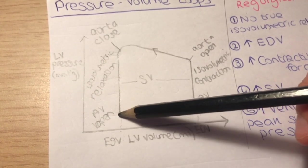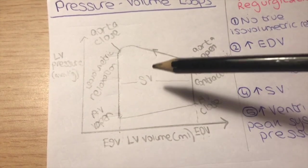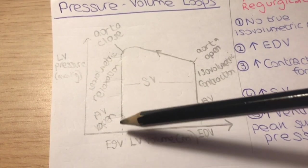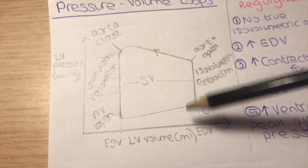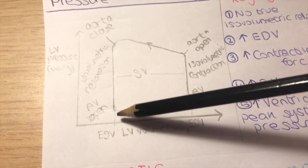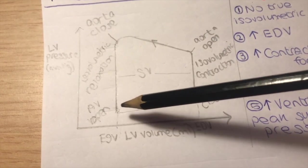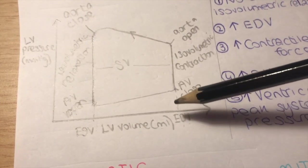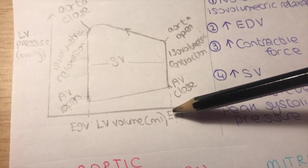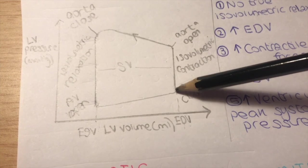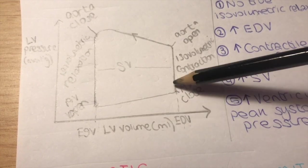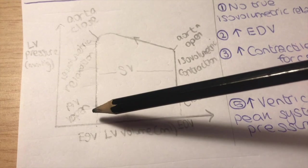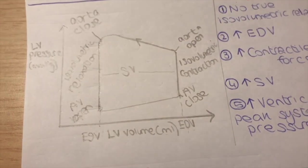This point here — this volume is referred to as the end systolic volume, which is the volume of the left ventricle after the ventricle has contracted, after most of the blood has gone into the aorta. This point here is referred to as the end diastolic volume, because it is the volume at which the ventricle is filled with blood after ventricular filling occurs.